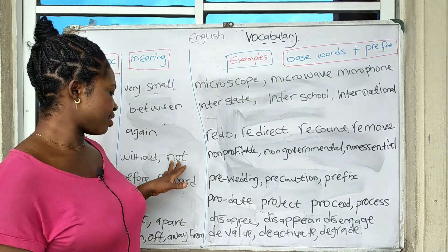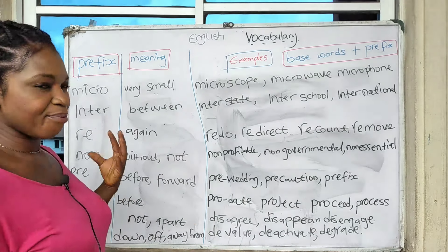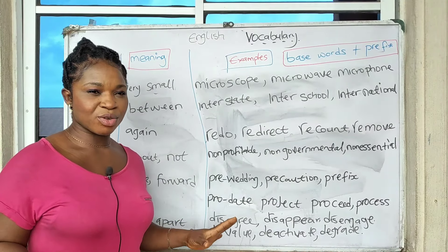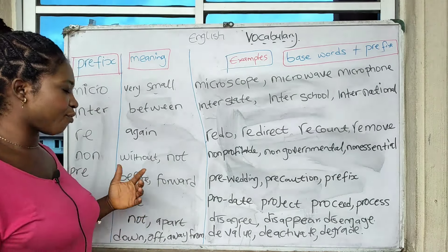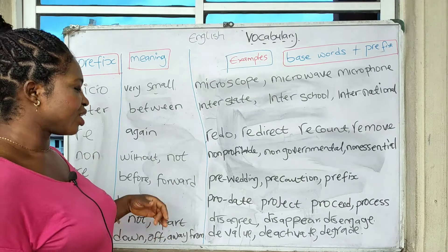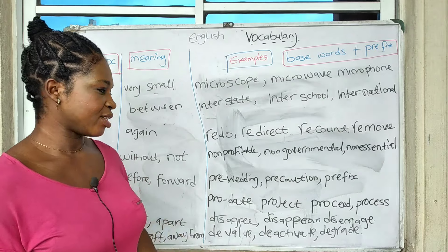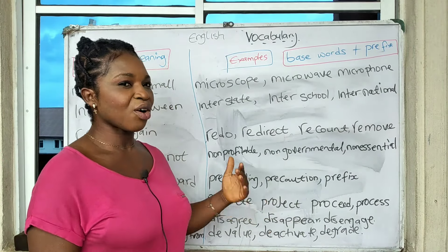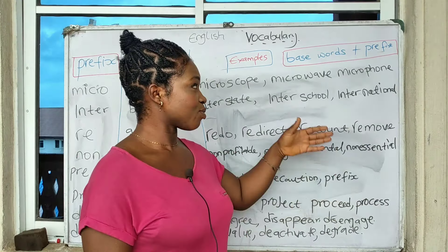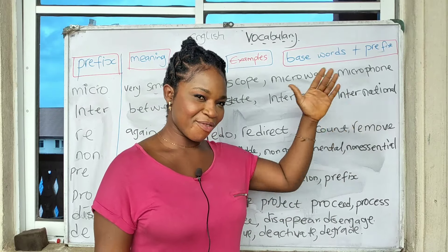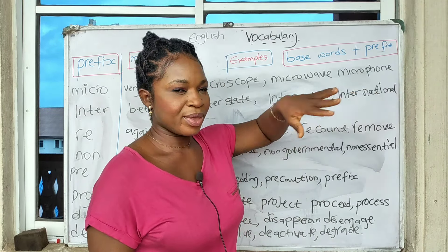'Pre' simply means before — something that happens before the main event. We have 'pre-wedding,' which is before the wedding. We have 'precaution' — you take caution before the main thing. And we have 'prefix,' which is what we are doing today — it comes before the base word.